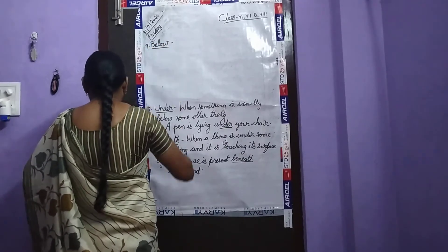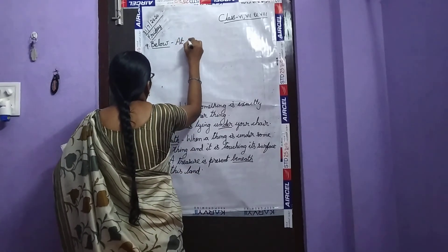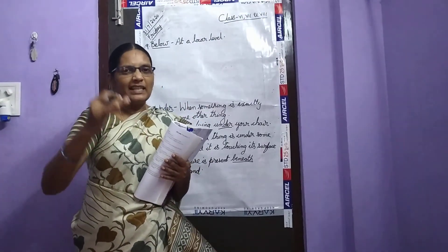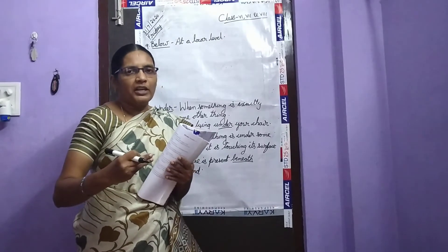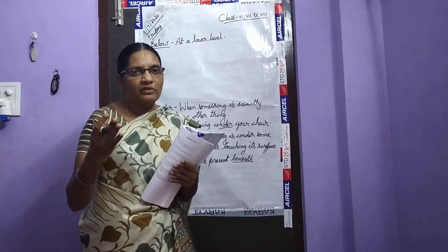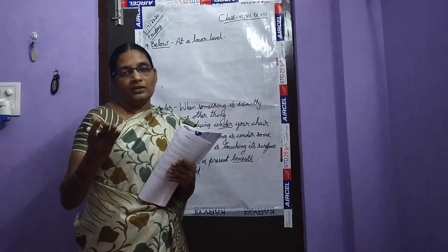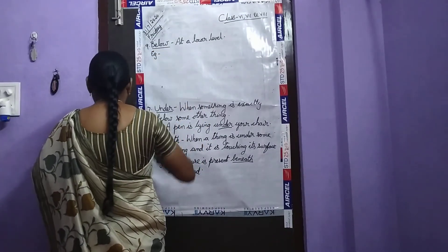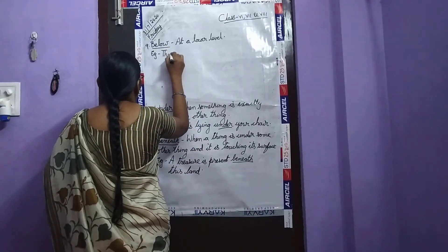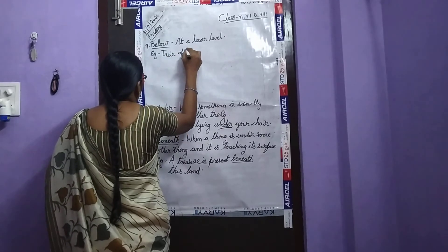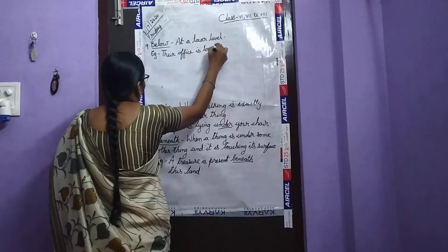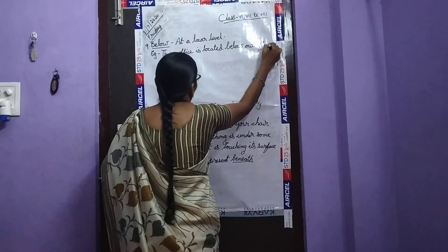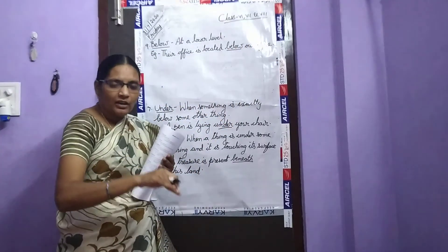The next one is 'below,' which means at a lower level. For example: their office is located below our office. The teacher might say — if you score above 90 marks, great appreciation; if you score below 80 marks, some punishment. So 'below' means at a lower level than something else.